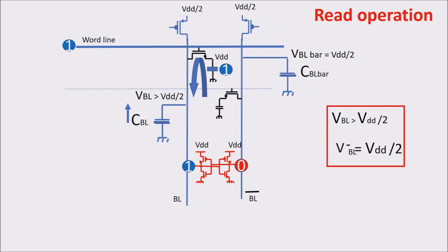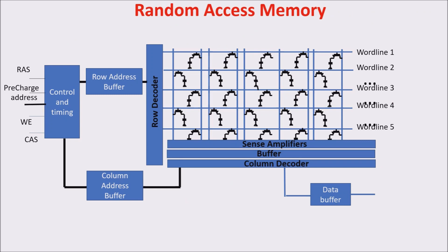Here is a wider picture of our memory where we can summarize the timings. We have a pre-charge time because we have to wait for the end of the pre-charge before giving a RAS signal, thus putting a wordline high to read or write a cell. This time is called RAS to Pre-Charge Time, or TRP. After giving the RAS signal, we need some time before all the sense amplifiers can react and start their positive feedback, putting the content of a whole row into the buffer. When the bits are in the buffer, we can give the column signal CAS to read the byte we are interested in. The time between RAS and CAS is called RAS to CAS Delay, or TRCD.